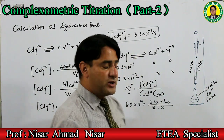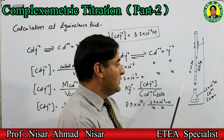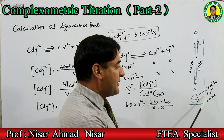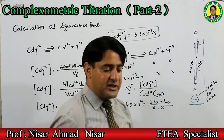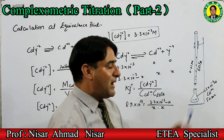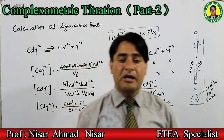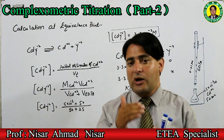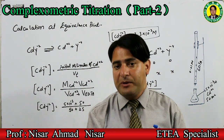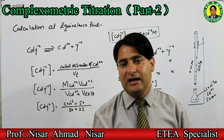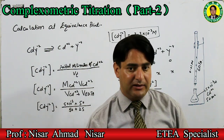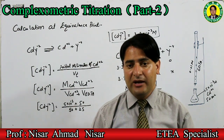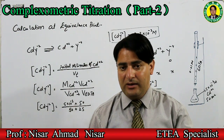ہم نے EDTA لیا تھا burette کے اندر 0.01 molar، جبکہ conical flask میں ہم نے 50 mL لیا تھا cadmium ion کا solution جس کی concentration تھی 5×10⁻³ molar۔ Calculation کے مطابق equivalence point پہ EDTA کا volume 25 mL آیا تھا۔ 25 mL سے پہلے کی calculation ہم کر چکے ہیں۔